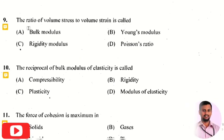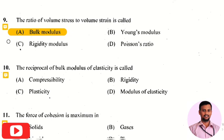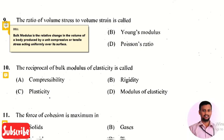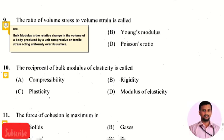The next question: the ratio of volume stress to volume strain is called? The right answer is option 1, bulk modulus. Bulk modulus is defined as the relative change in the volume of a body produced by a unit compressive or tensile stress acting uniformly over its surface, or equivalently, the ratio of volume stress to volume strain.